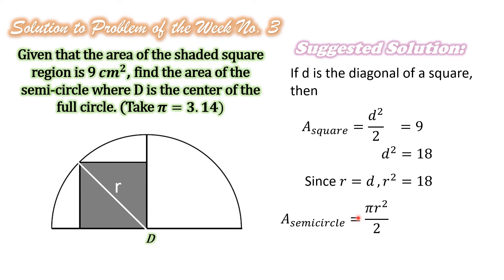Substituting the given values, pi is 3.14 and R squared is equal to 18. Then we have 3.14 times 18 divided by 2. 18 divided by 2 is equal to 9.